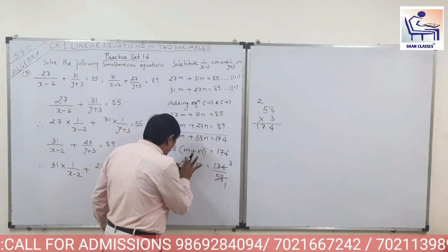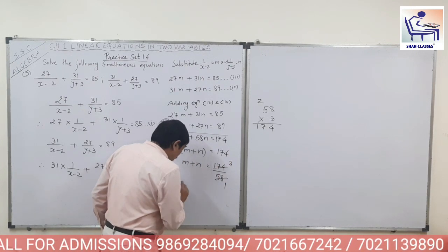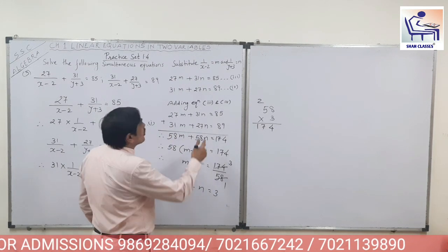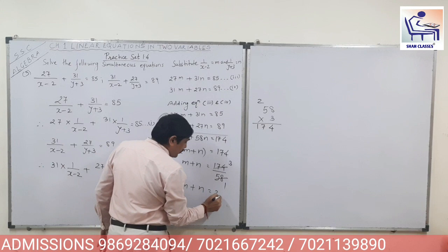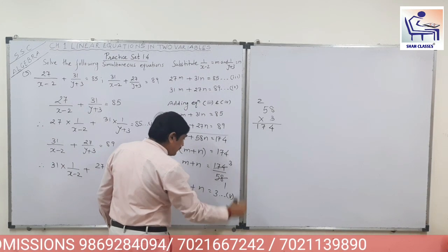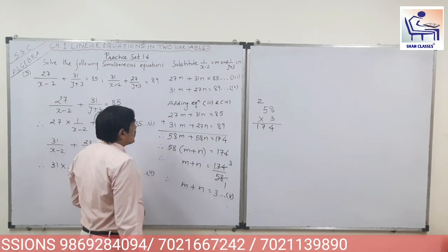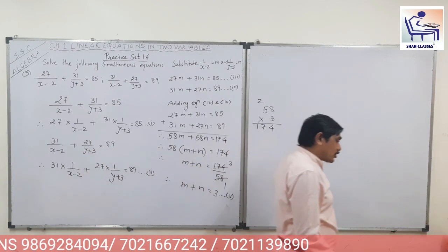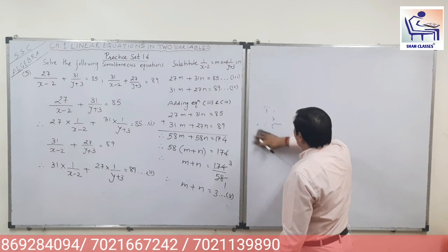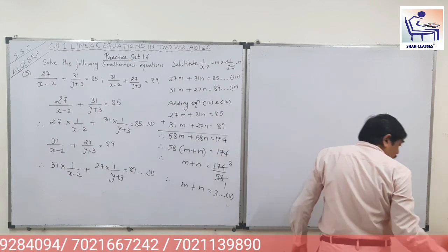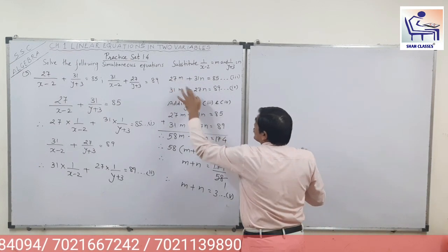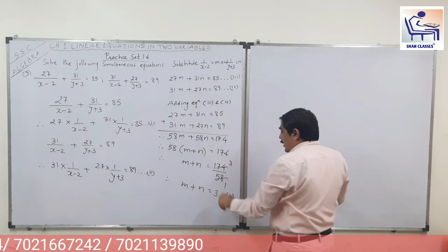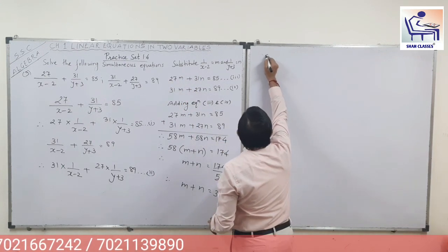So we got the value of M plus N as 3. This is your equation number 5. Equations 3 and 4 are done. Once we have done the addition, now we are going to do the subtraction. Please remember, this is a different kind of sum where coefficients are interchanged with different variables in different equations. Now we have to subtract.